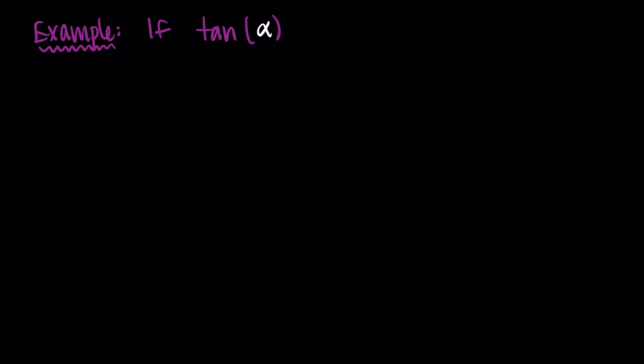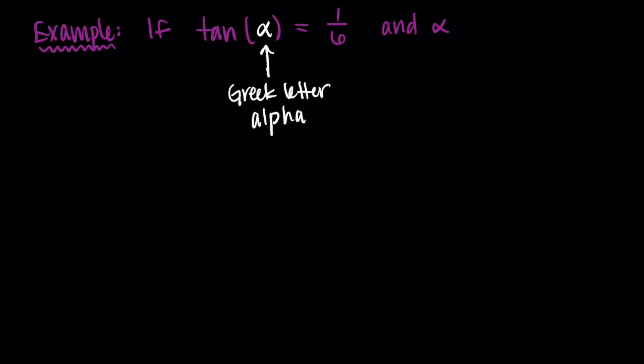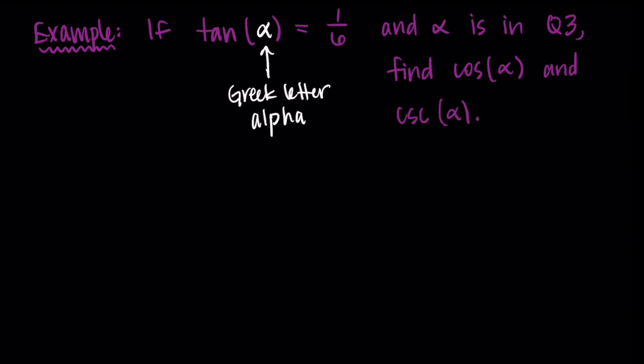Let's try another example — I'll let you try this one first. If tangent of alpha — the Greek letter alpha — is 1 over 6, and alpha is in quadrant three, find cosine of alpha and cosecant of alpha. Pause the video now, try it on your own: draw your triangle in the right quadrant, find the missing side length, then find the proper ratio.